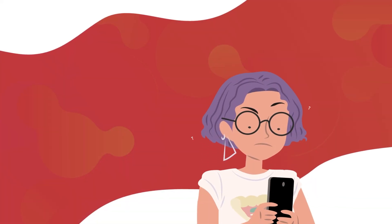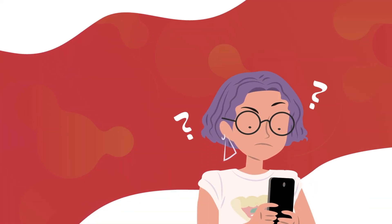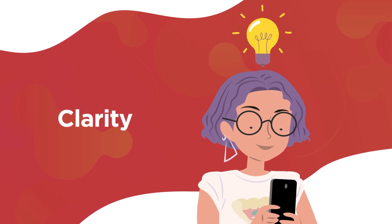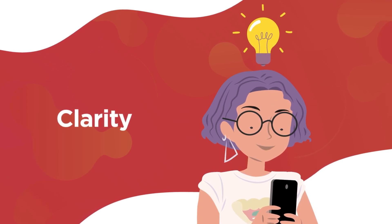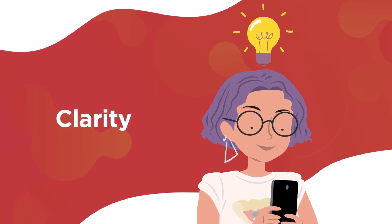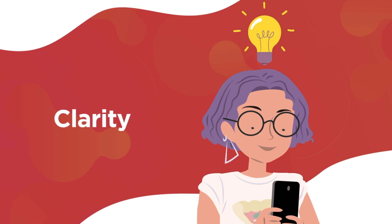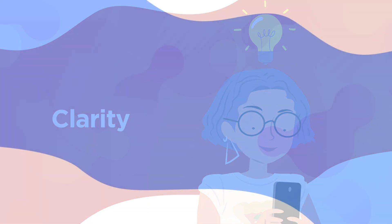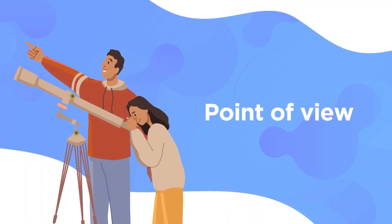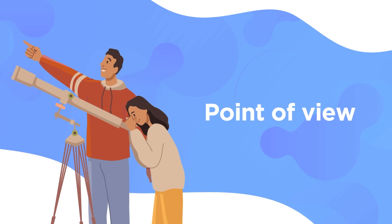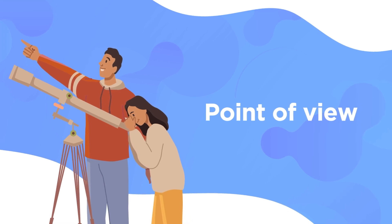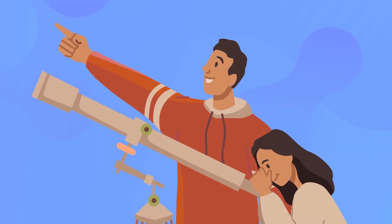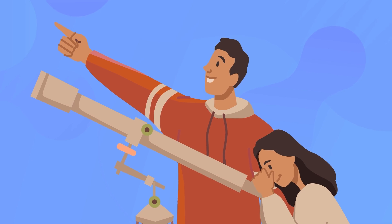What makes a compelling digital story? People watching should understand the story you're telling, the point you're making, or the experience you're sharing. Your point of view needs to come through clearly. Why is this story important to you? Why did you want to make that point or share that experience?